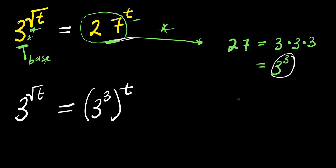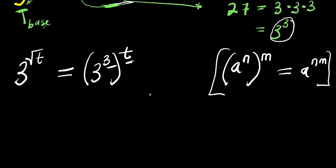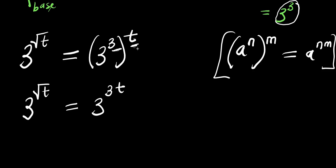Now going by this index law: a to the power of n, raised to the power of another n, equals a to the power of n times n. That means the 3 here will multiply the t, giving us 3 to the power of square root of t equals 3 to the power of 3t, because 3 times t is 3t.